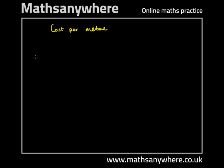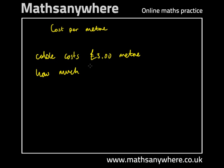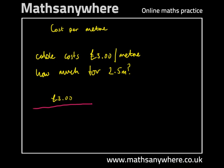Cost per meter — let's look at an example. If some cable costs three pounds for a meter, how much for two and a half meters, or 2.5 meters? We know that for one meter it costs three pounds, so that's three pounds per meter. We'll draw out our first meter of cable and make a note that it costs three pounds.